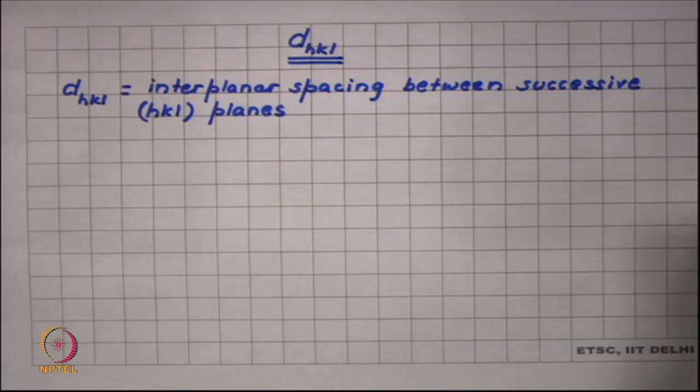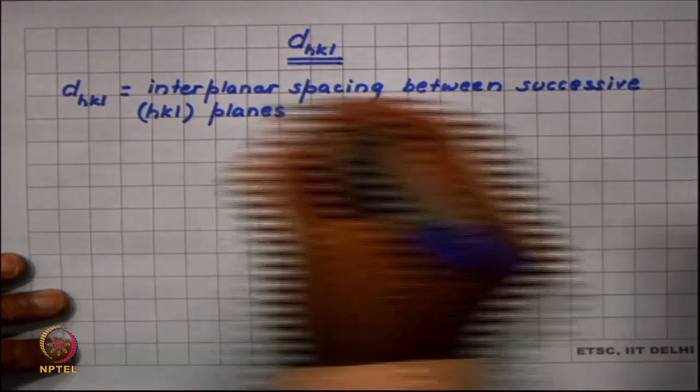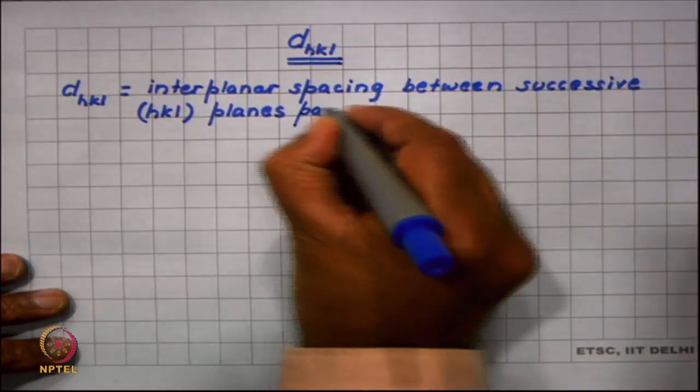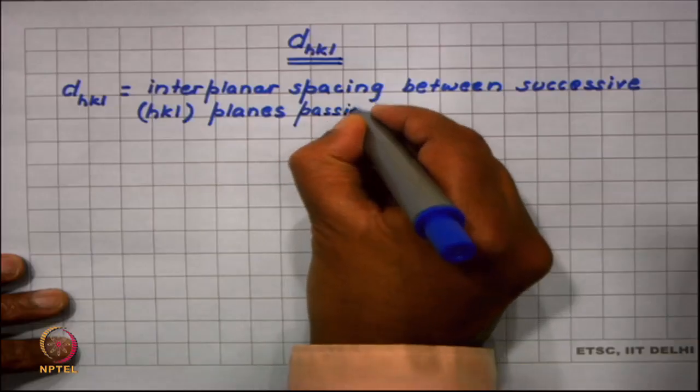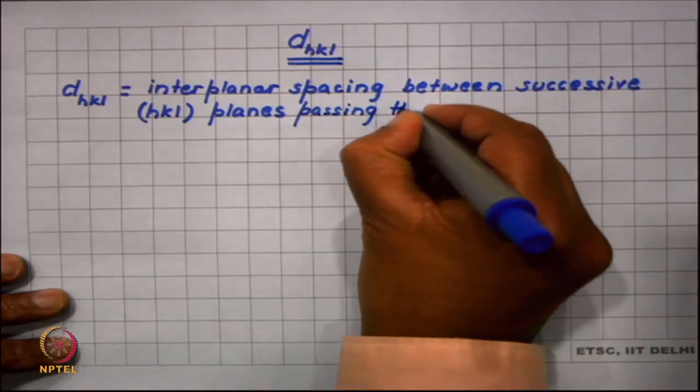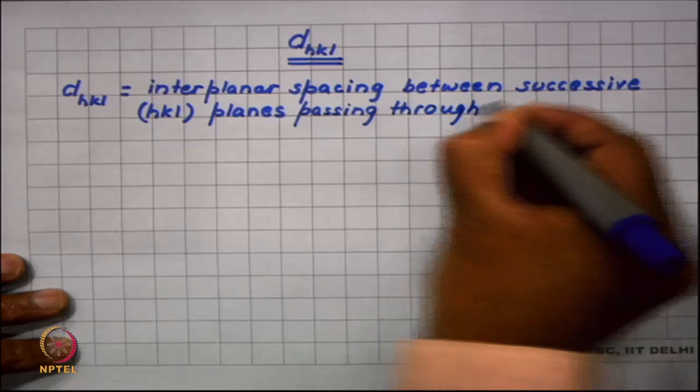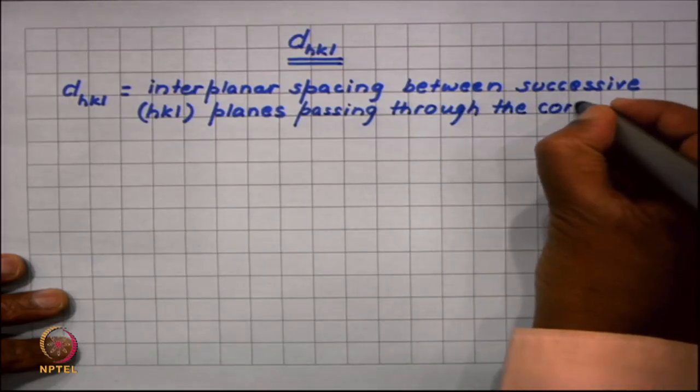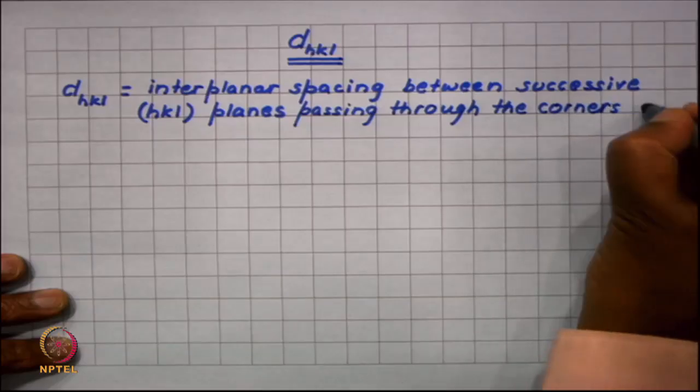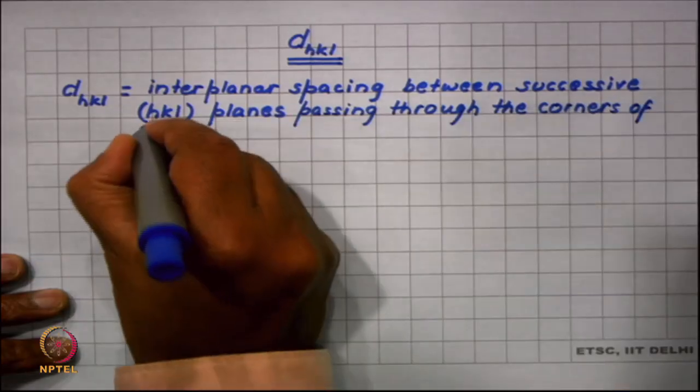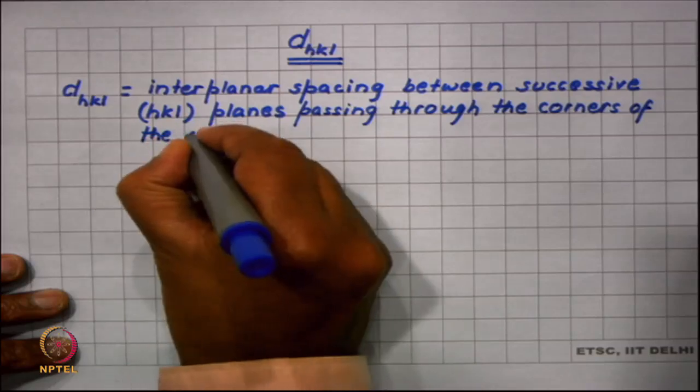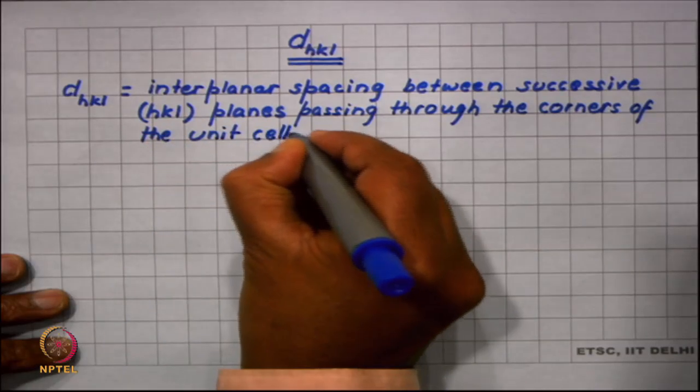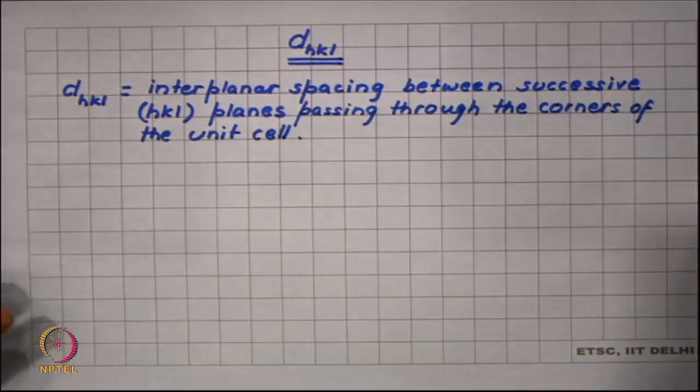If you have parallel planes passing through the corners of the unit cell, the spacing is between successive planes passing through the corners of the unit cell.